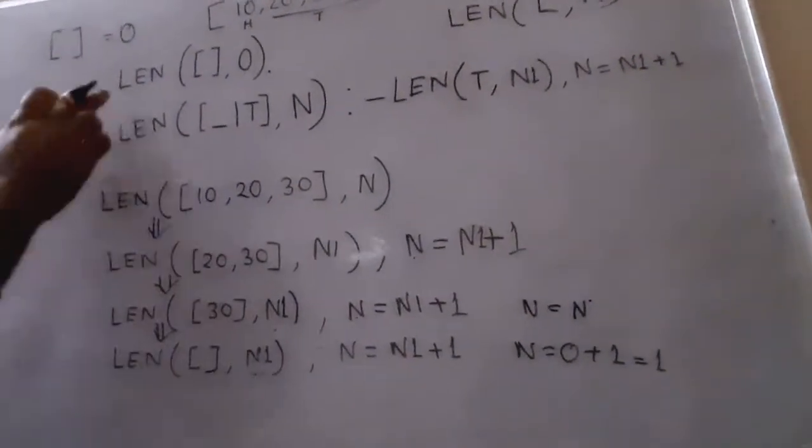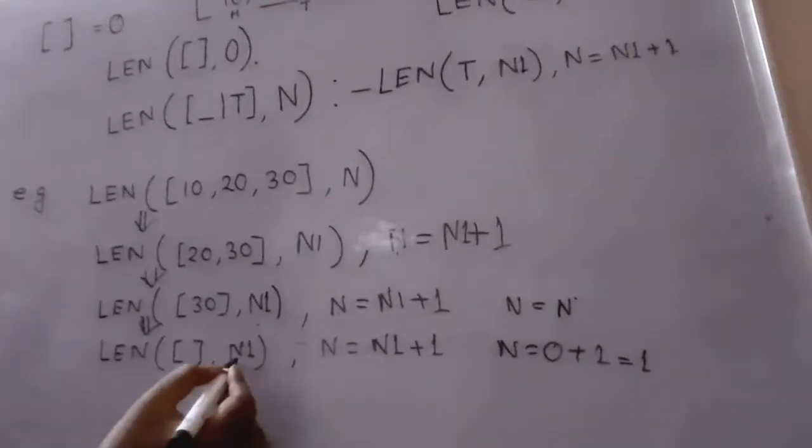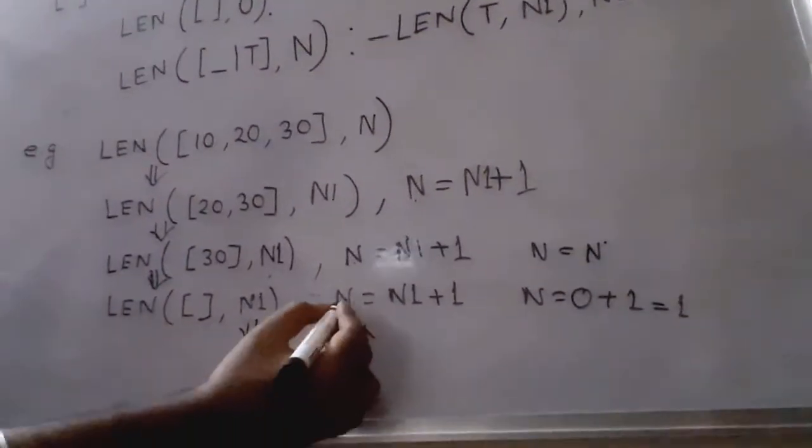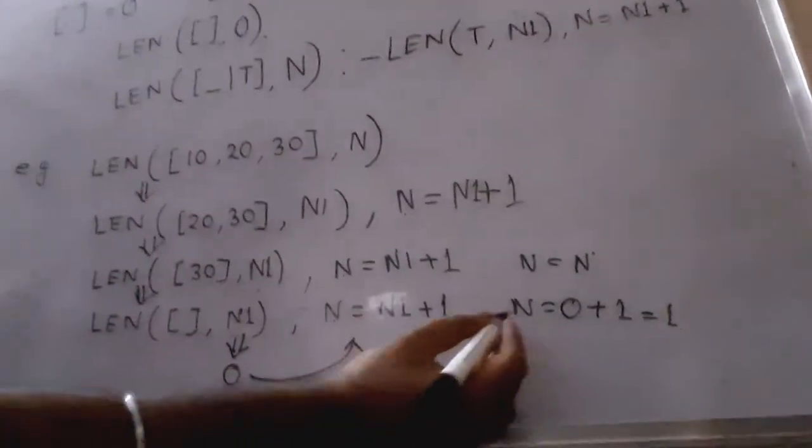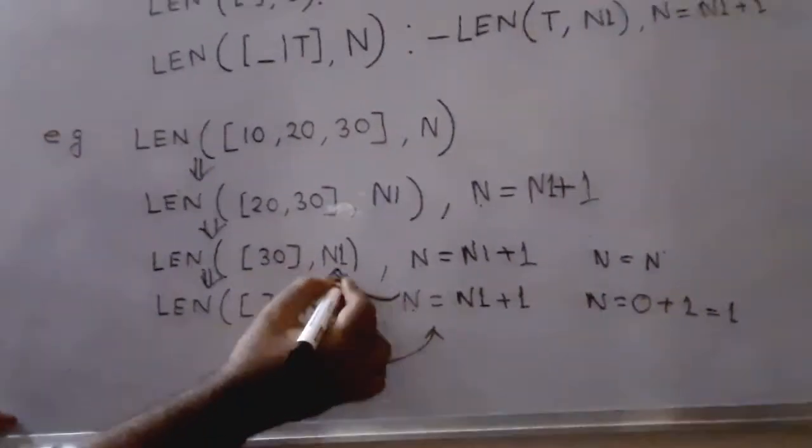Now it matches with the first clause: length of empty list is zero. The length N1 will be zero, and it will pass the value to the previous call. N = N1 + 1, so the value will be one. It will pass this value to the previous call.